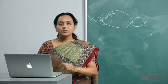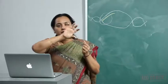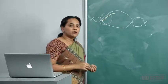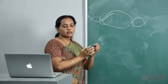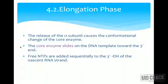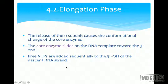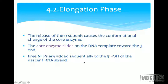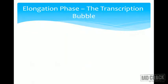In the elongation phase, the sigma subunit has caused a conformational change in the core enzyme. The core enzyme starts sliding on the DNA template towards the three prime end. Synthesis always occurs from five prime to three prime. Free NTPs are added sequentially to the three prime hydroxyl group of the nascent RNA strand. At the five prime end there is a phosphate, so nucleoside triphosphates can only be added at the three prime hydroxyl end. The sequence is determined by the template.